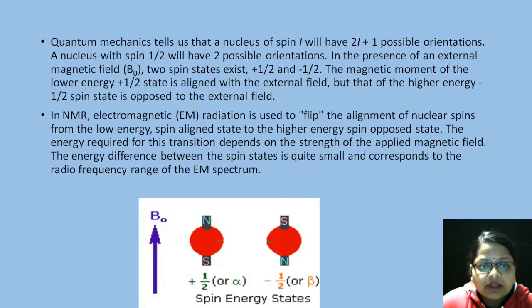In NMR, we first align the nuclei in the presence of an external magnetic field, and then we flip this nucleus between the two energy states with the help of electromagnetic radiation. In NMR, we use radio frequency waves. The electromagnetic radiation is used to flip the alignment of the nucleus from the lower energy to the higher energy state, which is against the direction of the magnetic field. For this transition, the nucleus requires energy, and this energy is provided by the EM waves.